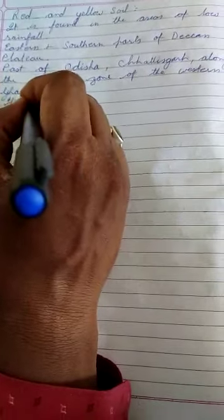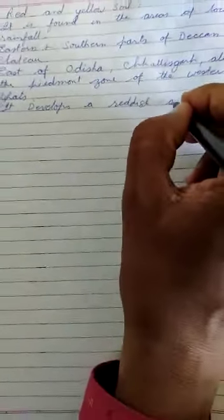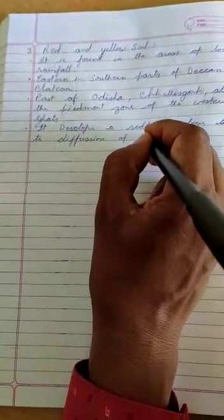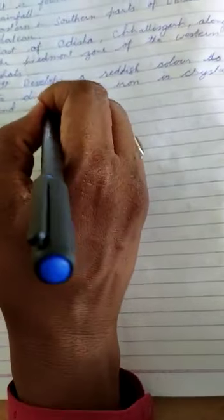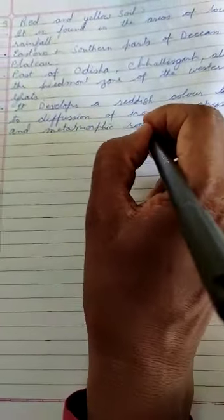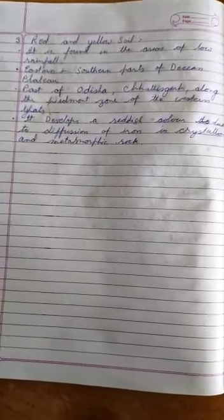Why is it known as red and yellow soil? Because it develops a reddish color due to diffusion of iron in crystalline and metamorphic rocks. This soil has some iron contents, and when rain comes and water comes in contact with the iron, it produces rust. So it gets reddish color.